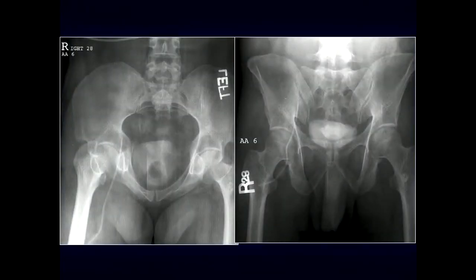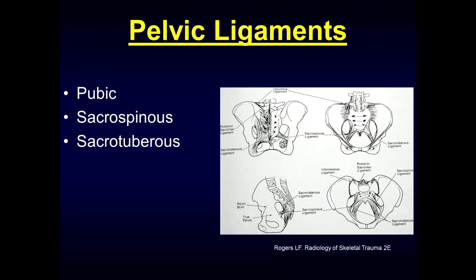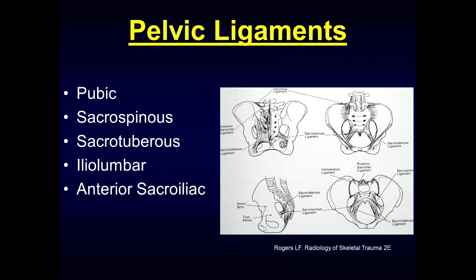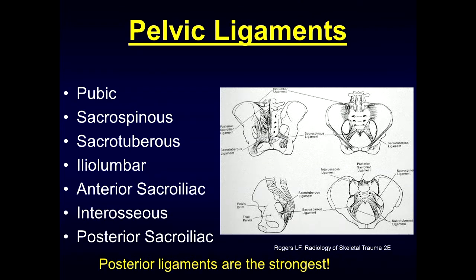Inlet and outlet views can help us look for those rami fractures, look for any widening of the sacroiliac joints, or loss of the normal contour of the sacral foramina. The pelvic ligaments are important to discuss as they help with stability of the pelvis. We have our pubic ligaments, sacrospinous and sacrotuberous ligaments, iliolumbar ligaments, anterior sacroiliac, interosseous, and posterior sacroiliac ligaments. It's these posterior ligaments that are the strongest, and if they're disrupted, they are typically associated with unstable type of pelvic injuries.